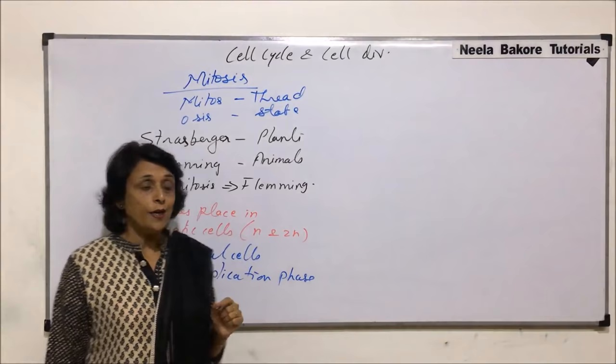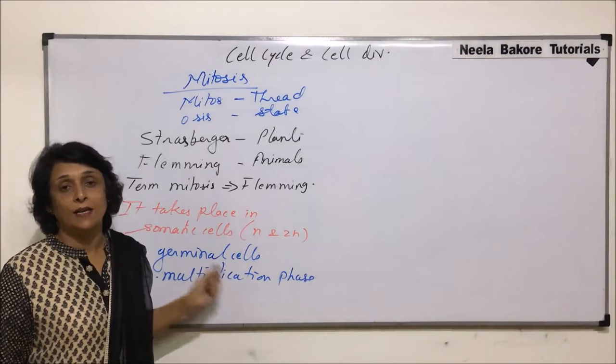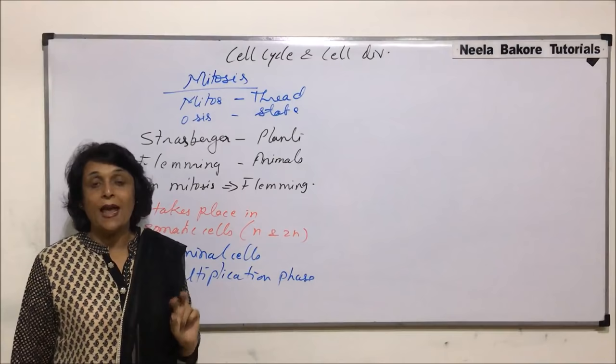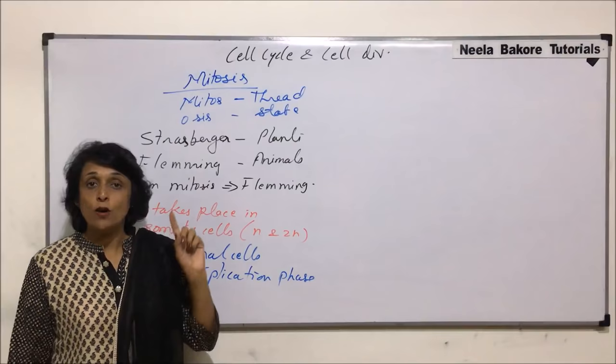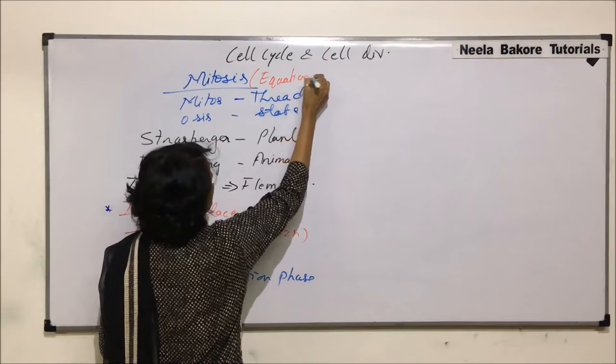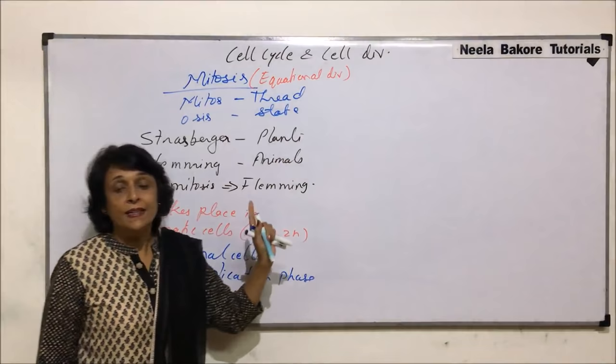The most common type of cells where this division is seen are somatic cells, which is why this division is also known as somatic division. But we must remember that the same division also takes place in germinal cells during the multiplication phase. As a result of mitotic division, two daughter cells are formed, and these two daughter cells have the same number of chromosomes as that of the parent cell.